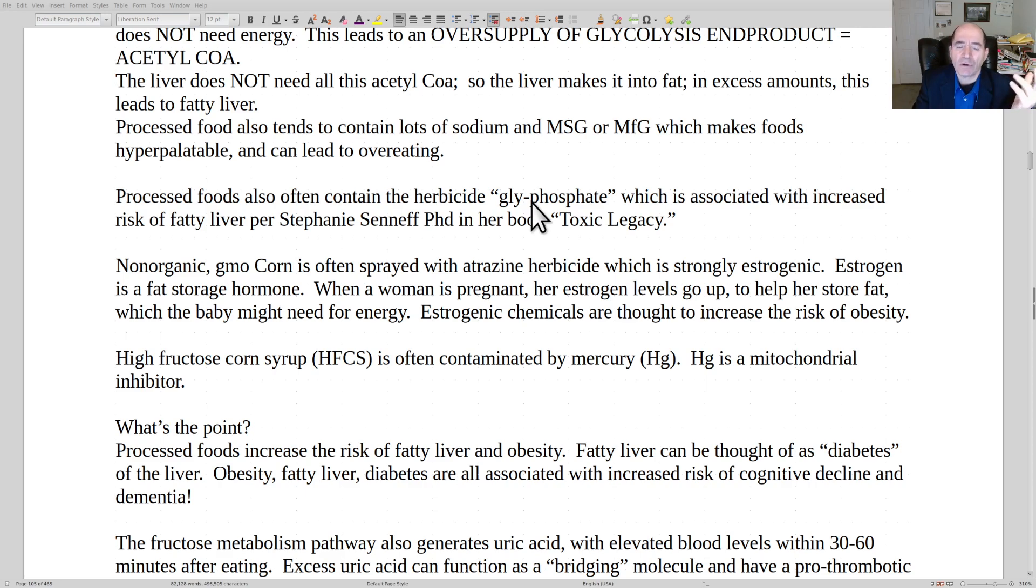That's really associated with fatty liver. We talked about the corn being sprayed with atrazine. That's another estrogenic herbicide. Estrogen's a fat storage hormone. It's often sprayed with mercury. That's toxic and inhibits mitochondrial function.